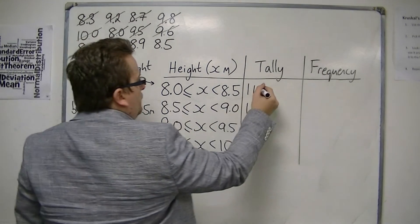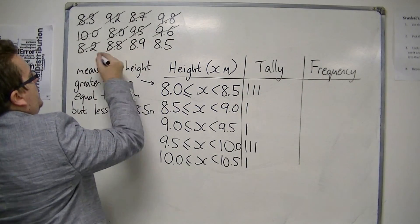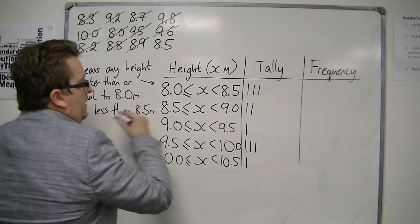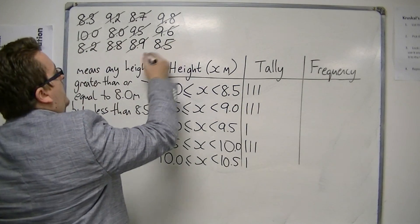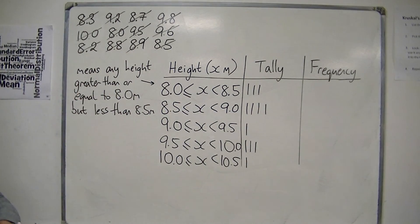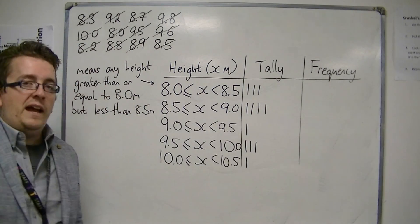8.2 would go in there. 8.8 would go in there. 8.9 would go in there. And then 8.5 would go in this group, rather than the first group. And that would be my tally.